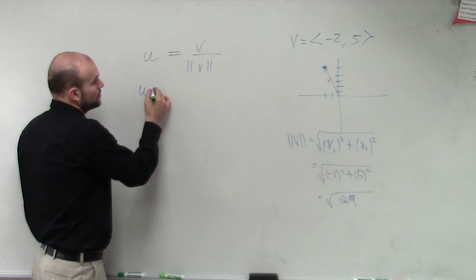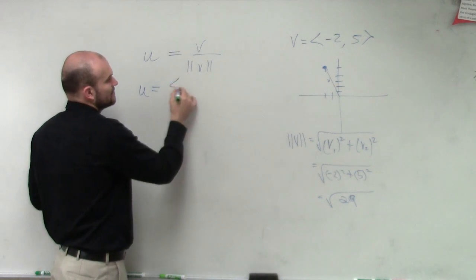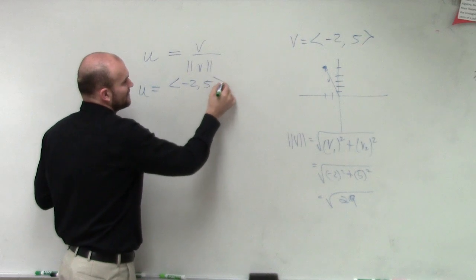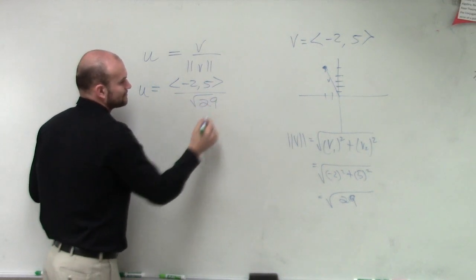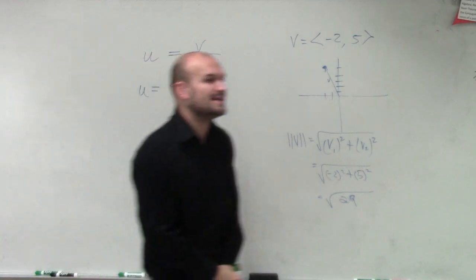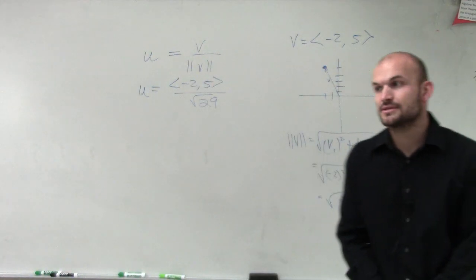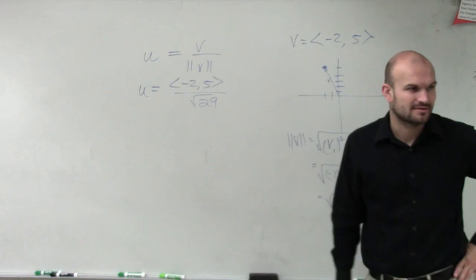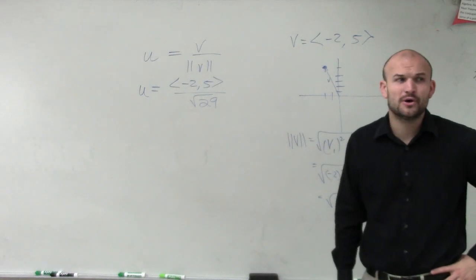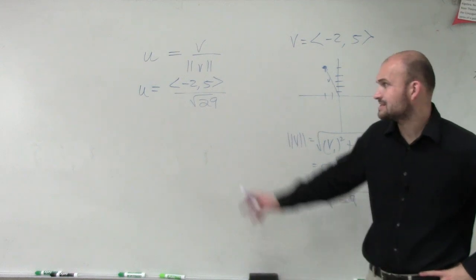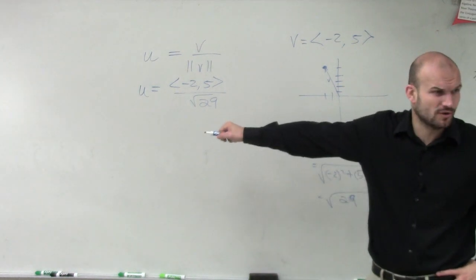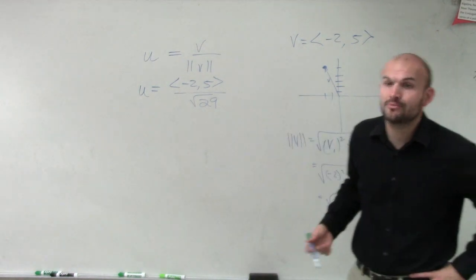So what we do is we take u equals, we take our v, which is <-2, 5>, and we divide it by our magnitude, which is the square root of 29. So guess what? Now that is your unit vector. And you might say, well, how do you know that has a magnitude of 1? I don't know. But let's go and check it out.